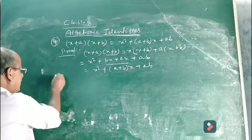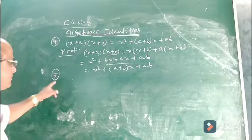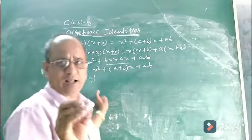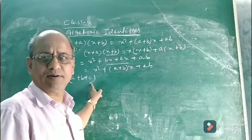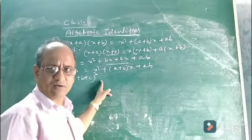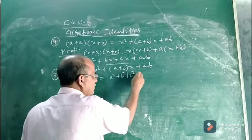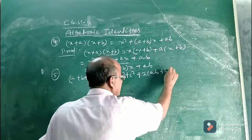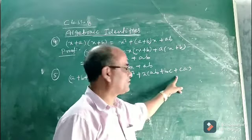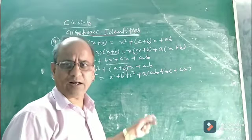Now the fifth identity — this is the last identity in your Class 8 syllabus. The fifth identity is about the square of a trinomial. A trinomial is an algebraic expression having three terms: a, b, and c. The expansion of a plus b plus c whole square is a square plus b square plus c square plus 2ab plus 2bc plus 2ca. Let us prove whether this identity is true.